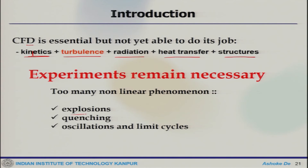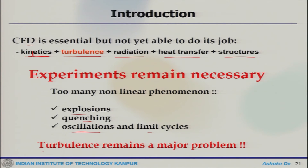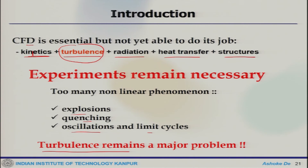Combustion can involve explosions, local quenching, oscillations, and limit cycles. The backbone of all these issues is the turbulence. When you talk about turbulent combustion — where combustion itself is already complicated — dealing with a turbulent system creates another level of problem that remains a huge challenge.